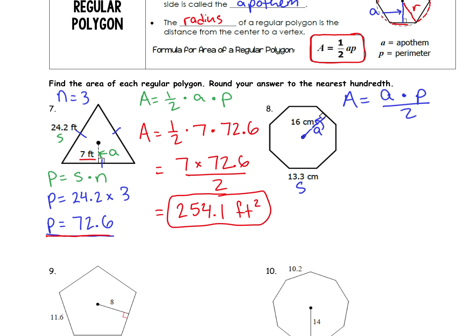So I'm going to count the number of sides: 1, 2, 3, 4, 5, 6, 7, 8. There are 8 sides to this shape. Now because of that, I can find perimeter. Perimeter is equal to the side length, S, times the number of sides, N. So P is equal to 13.3 times 8. 13.3 times 8, that gives me 106.4.